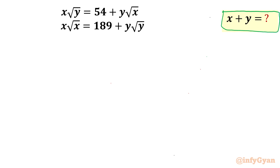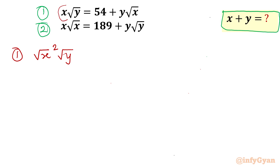Let us get started by writing equation 1 and equation 2. For the first equation, I can write x as (√x)² times √y. Then I will take the y√x term to the left, writing similarly (√y)² · √x, so that the equation becomes (√x)²·√y − (√y)²·√x = 54.